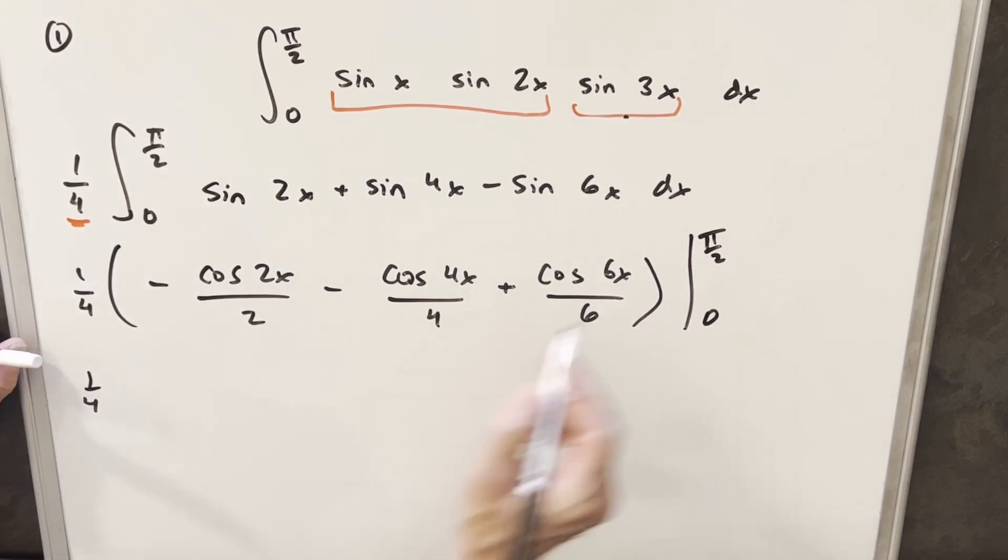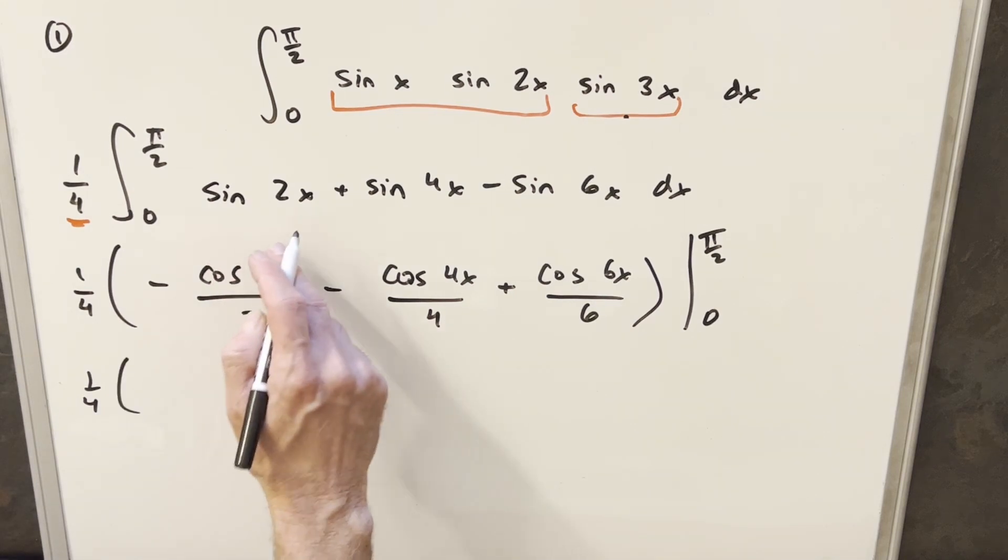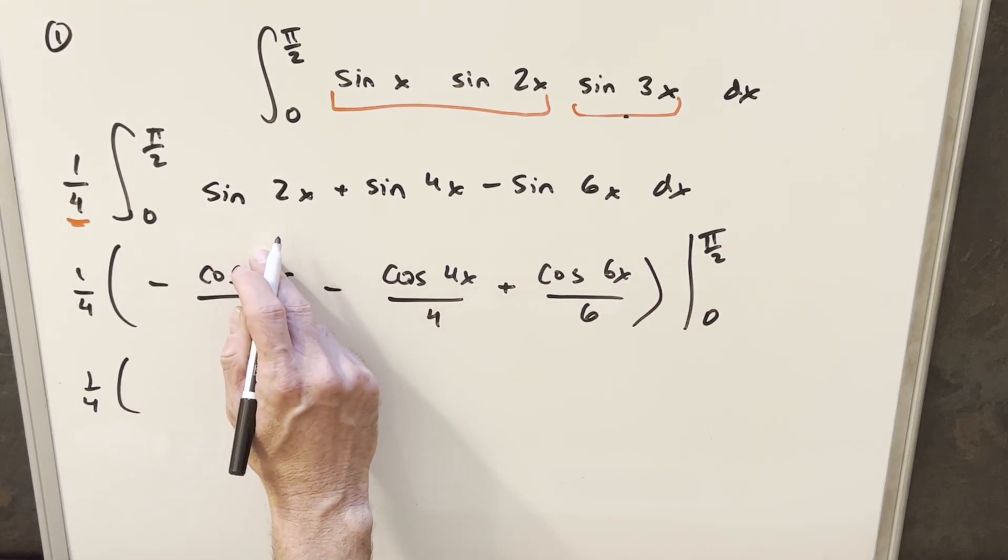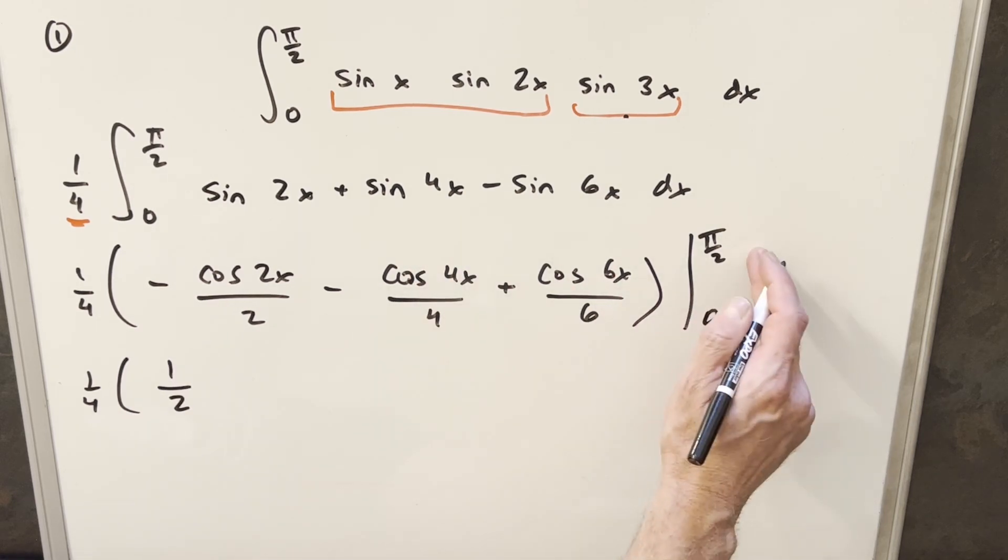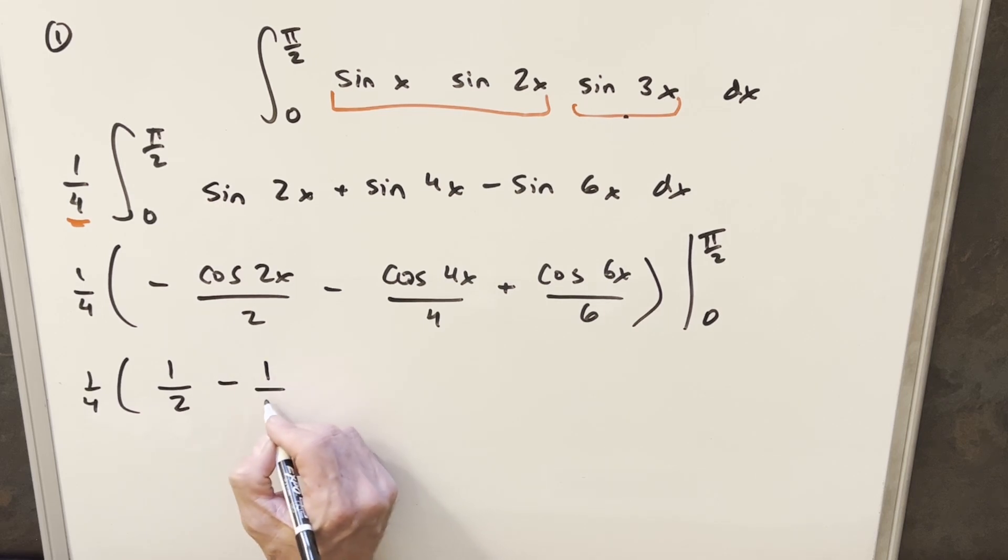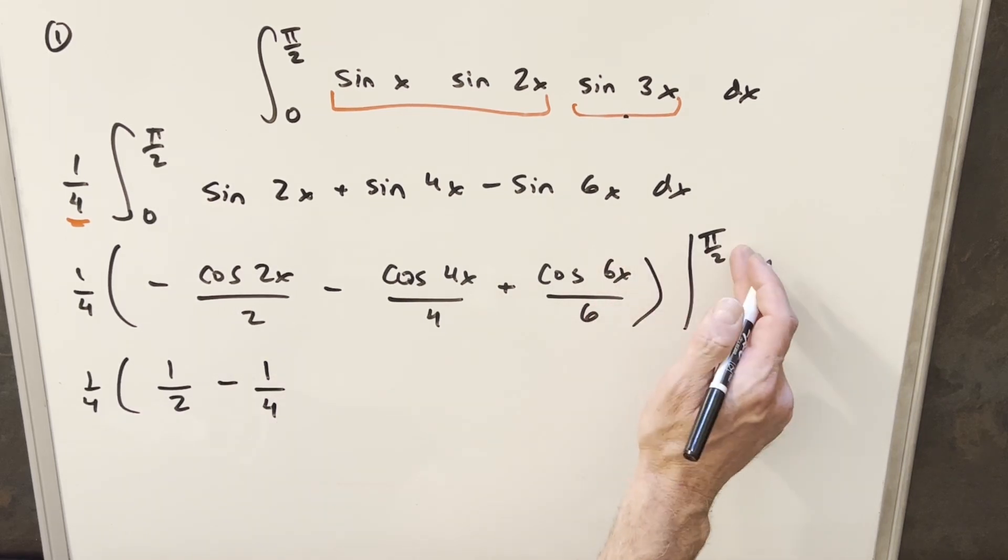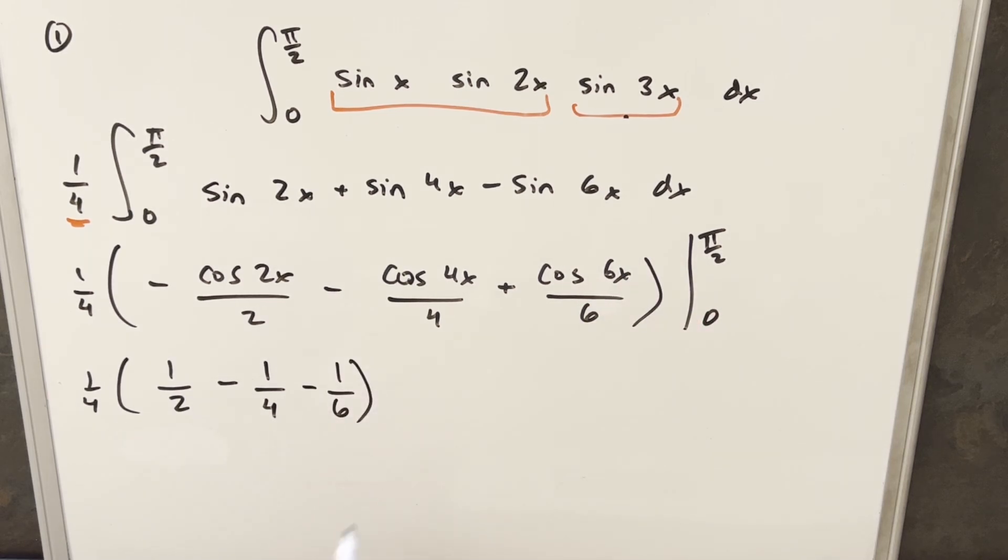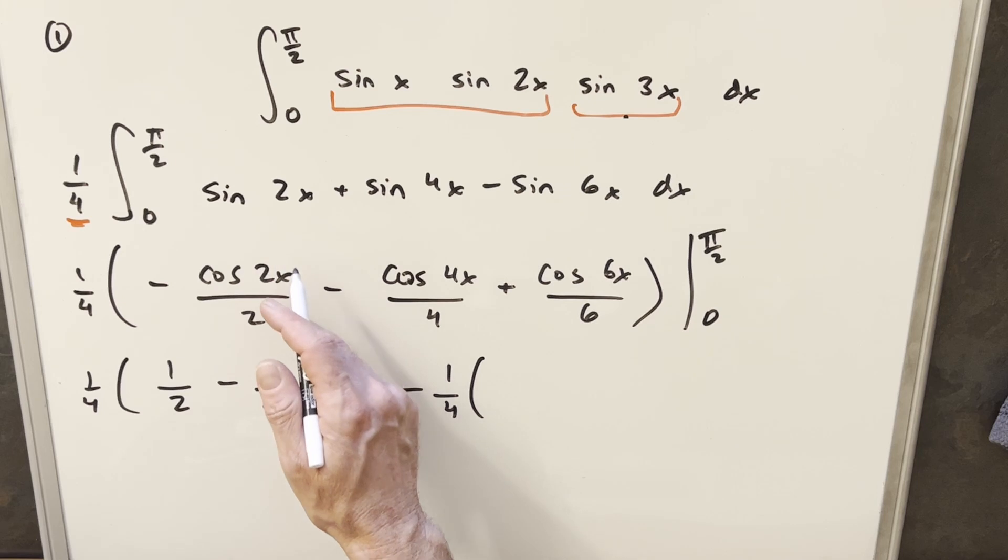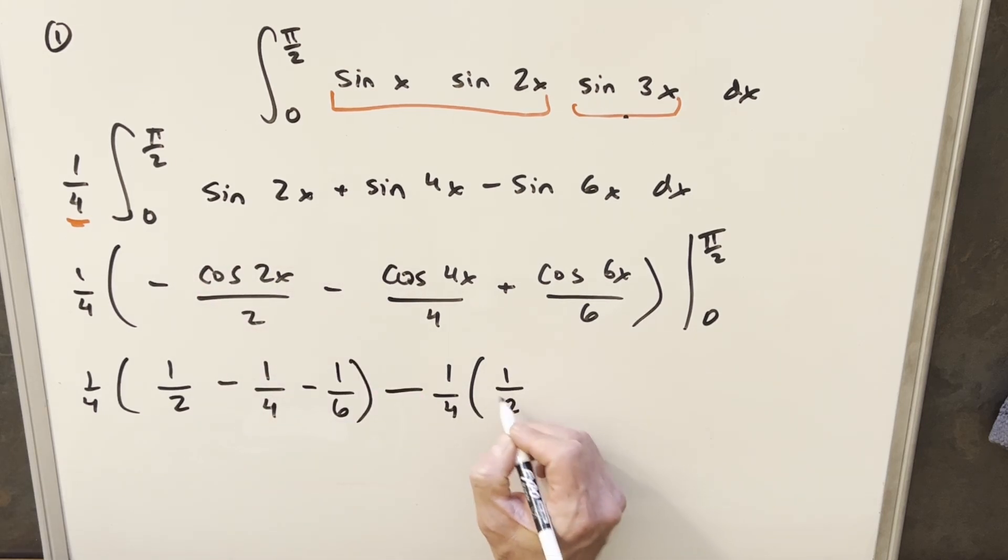So let's plug this in. So now plugging in pi over 2, cosine of 2 times pi over 2 is going to be cosine of pi, which is going to be a minus 1 here. With the minus 1 in front, that's going to give me 1 half. Then doing a 4 times pi over 2, that's going to be a 2 pi. We're going to have a minus 1 over 4 here. And then 6 times pi, that's going to be a 3 pi. That's going to give me a minus 1 here. So we're going to have a minus 1 over 6. Then for our 0, we'll have our 1 fourth out front. So I plug the 0 and all these cosines are going to be 1. Cosine of 0 is always 1. So we're going to end up here. This first term is going to be minus 1 half minus 1 over 4. And this is just going to be plus 1 sixth.